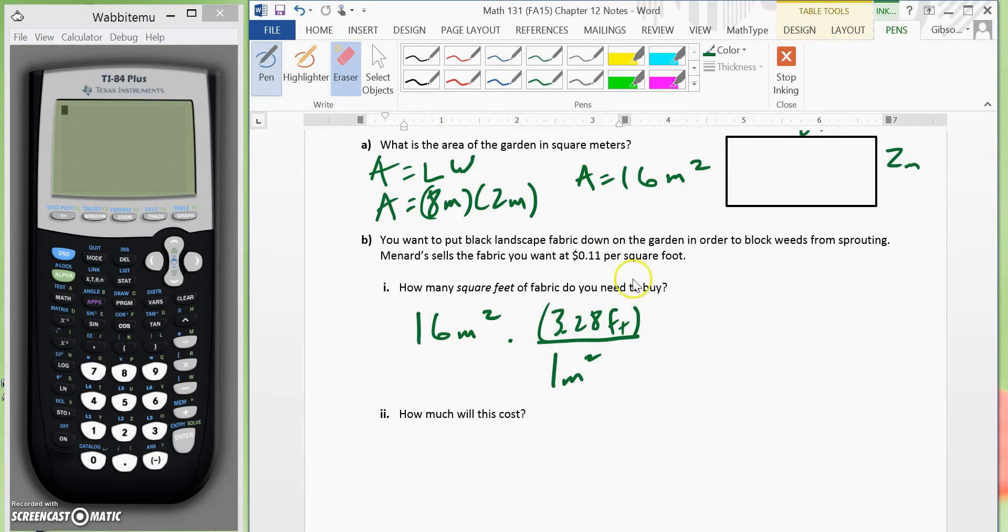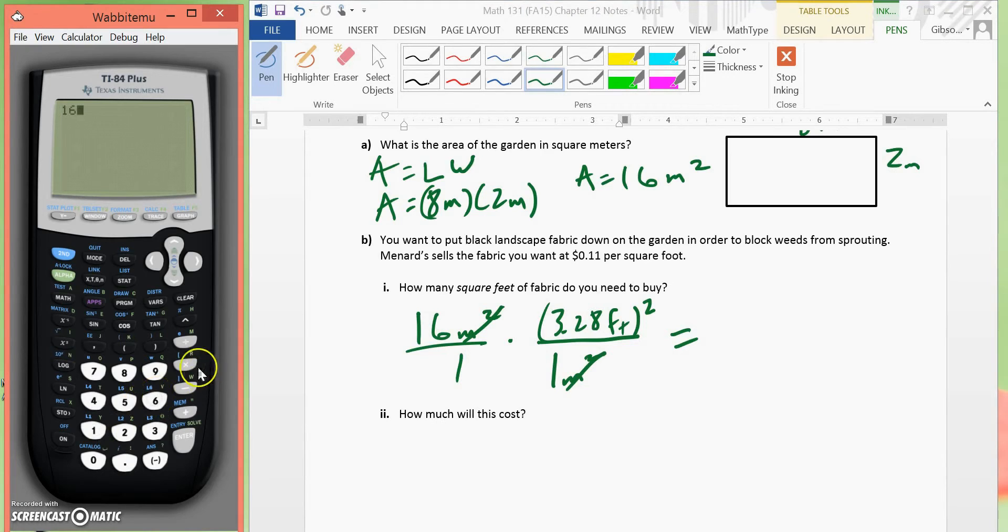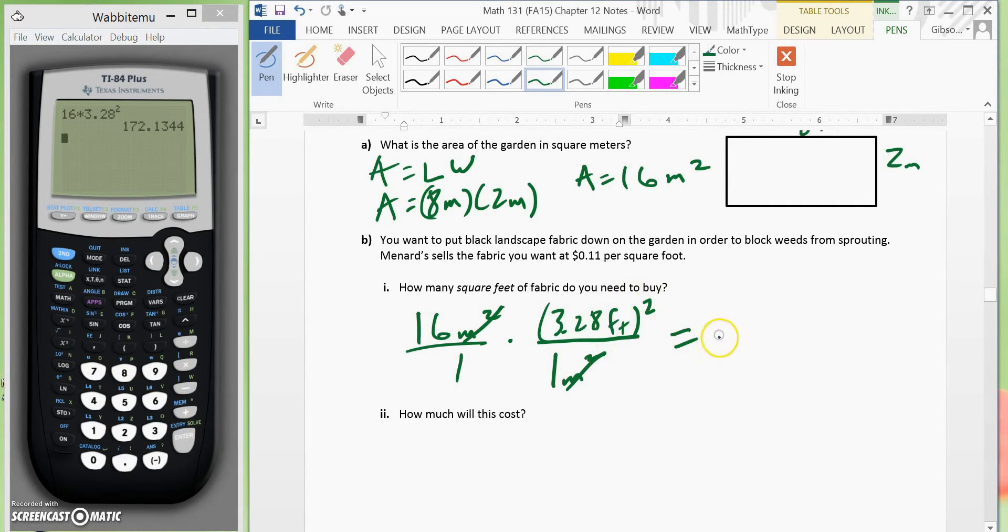Okay, so, now that we have this, now what we would do is, since we have access to a calculator, we could put this in a calculator and square the final answer. So, it would be 16 times 3.28 squared. And that would give us, if we round to one decimal place, it would be 172.1. So, this would be 172.1 square feet.